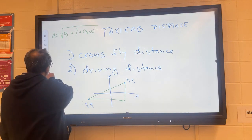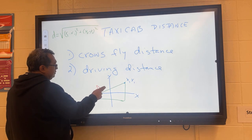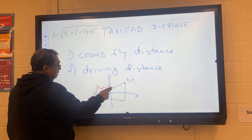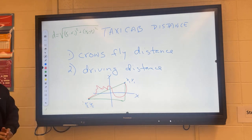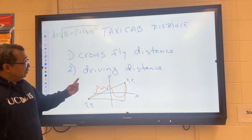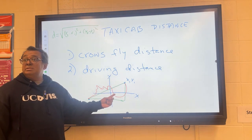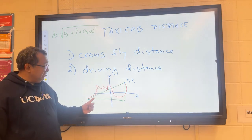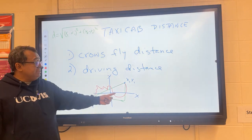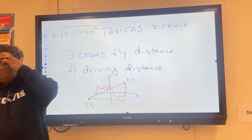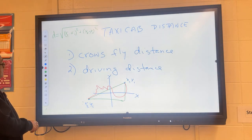There may be a highway over here, then you may have to go through some city with traffic lights, then take another highway that goes like that. So typically your driving distance will be larger than your crow's fly distance. It could be the same if there's a highway that goes directly, but most of the time the driving distance is going to be a lot larger.